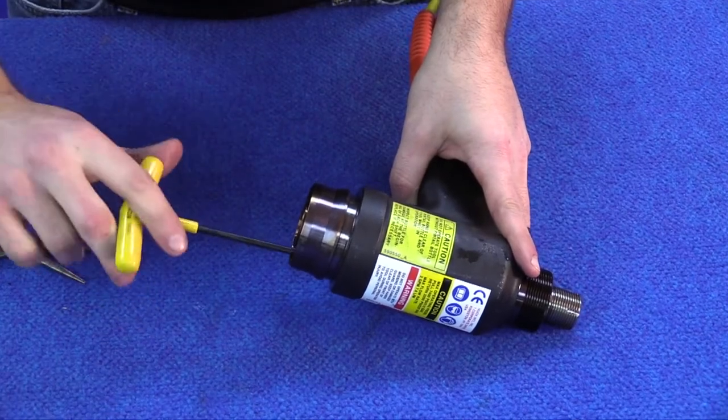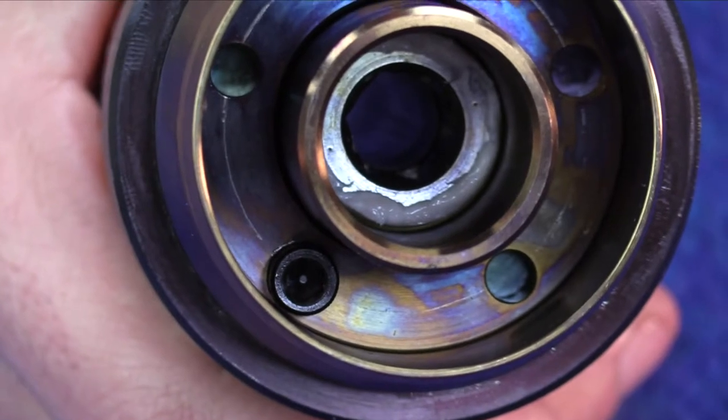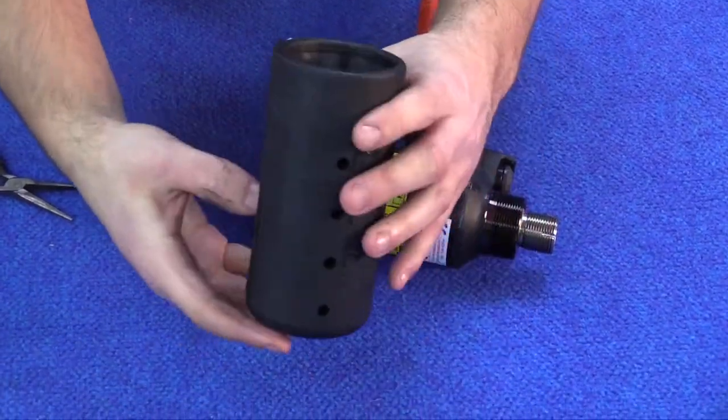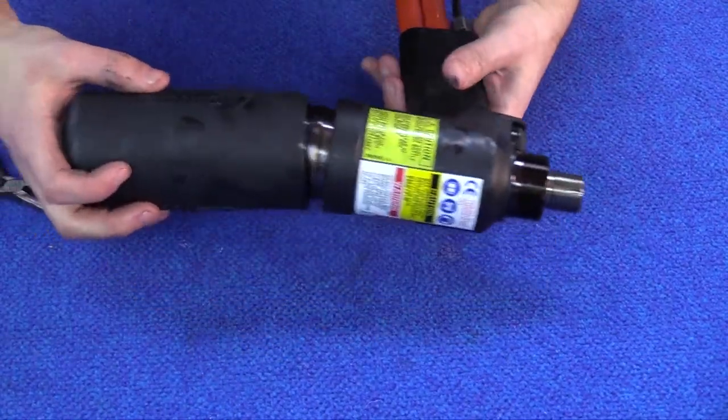Reinstall the handle set screw. Inspect pin tail bottle for any damage to either the rubber bottle or the wear plate in the back, and reinstall onto the tool.